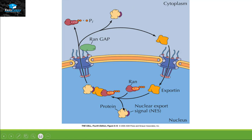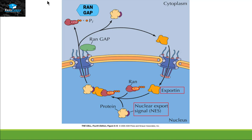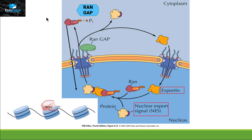The protein that needs to get out of the nucleus attaches itself to a receptor called exportin, which also binds RAN-GTP in order to exit the nucleus. Once all three — the cargo protein, exportin, and RAN-GTP — are bound together, they travel out through the nuclear pore into the cytoplasm. In the cytoplasm, RAN-GTP is hydrolyzed into RAN-GDP by RAN-GAP, causing the cargo protein and exportin to detach from each other. RAN-GDP then goes back inside the nucleus, where RCC1 converts it back into RAN-GTP, and this process continues.